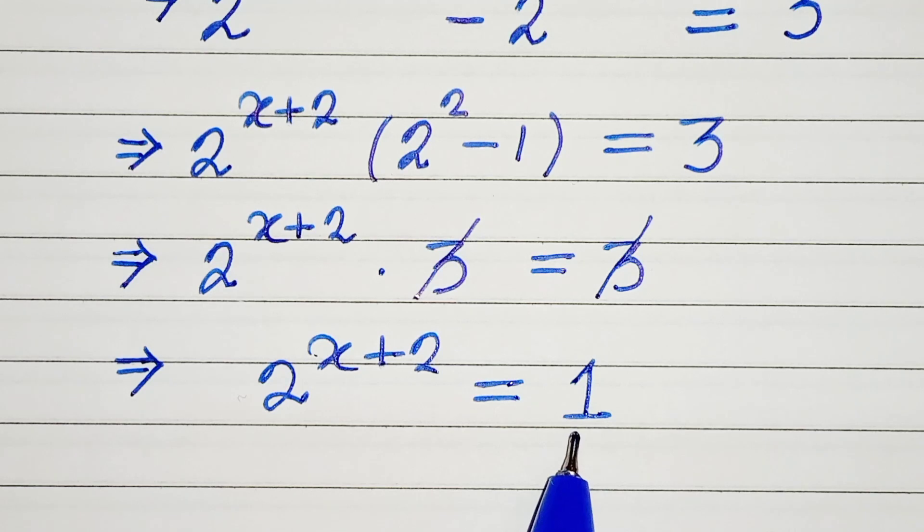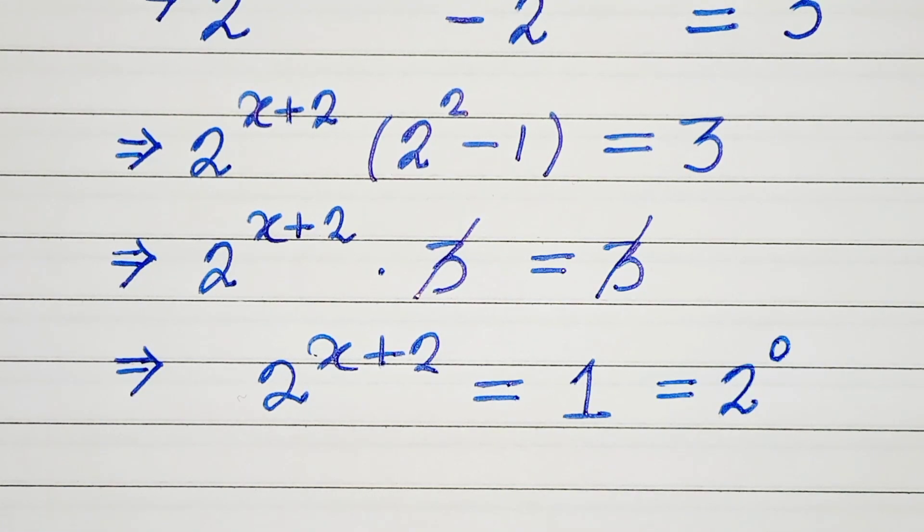And 1 can be written as 2 raised to the power 0. Now if we compare both sides, x plus 2 equals to 0.